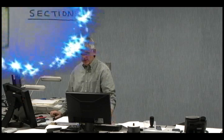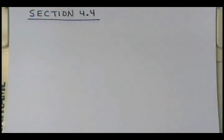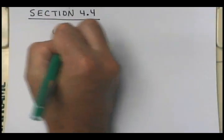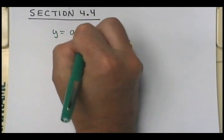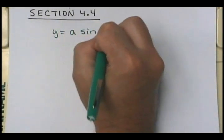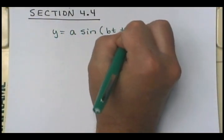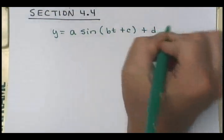Some of the problems are going to be not that hard, and some of them you may think are a little tricky. Let's start by getting out of the way a few basic things. If you look at our sine graph for just a minute, we know y equals a times the sine of bt plus c, plus d.